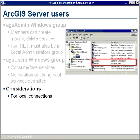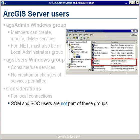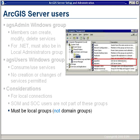A few things to consider: this is only for local connections made to ArcGIS Server — it doesn't apply to internet connections. There's a separate mechanism for restricting access for internet connections, fully documented in the ArcGIS Server Help. Also, the SOM and SOC users are not part of these groups — sometimes clients mistakenly add the SOC and SOM accounts to these groups during troubleshooting, but that's not required and won't help. These groups must be local groups, not domain groups, although existing domain users or groups can be added within these local ArcGIS Server groups.